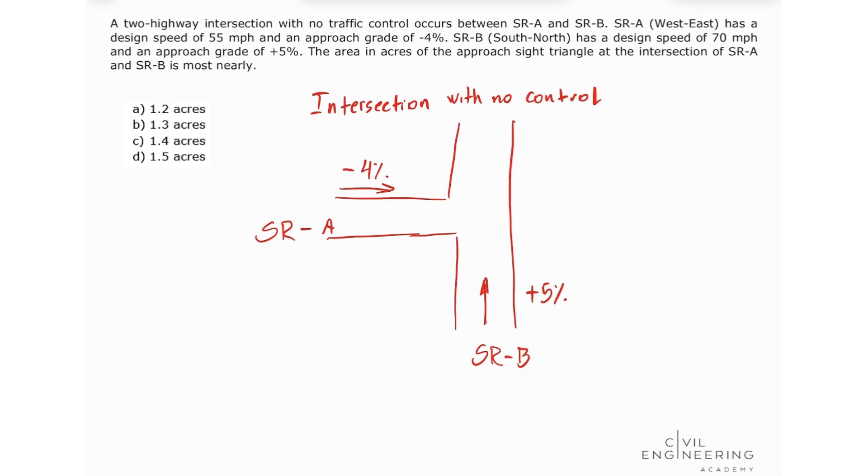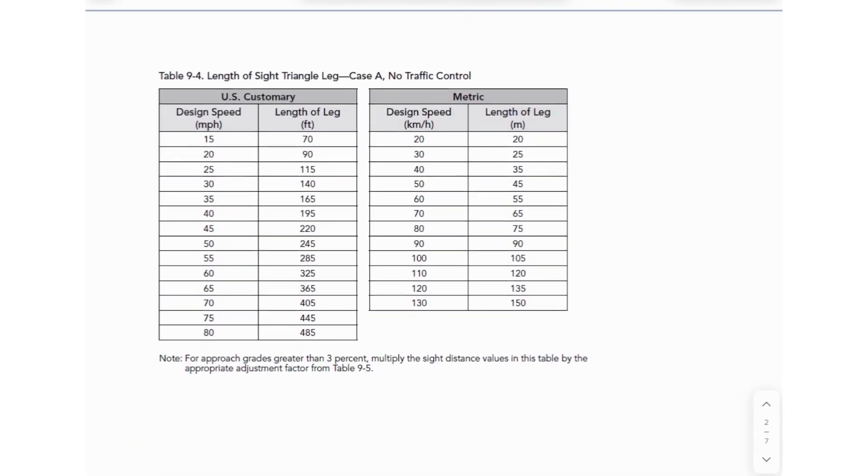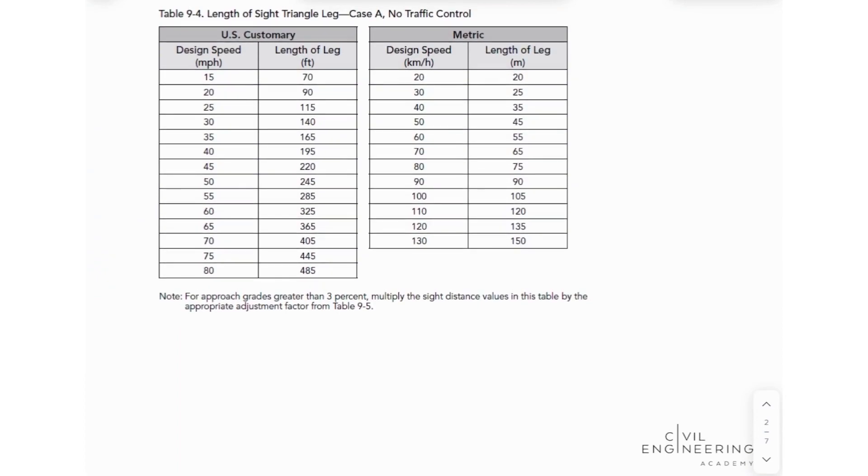Okay, so to solve this problem, we're going to be consulting our AASHTO Green Book and we're going to be looking on page 9-41 and we're going to look at table 9-4. I already put this table here for use. So this table gives us the length of the side triangle leg for case A with no traffic control.